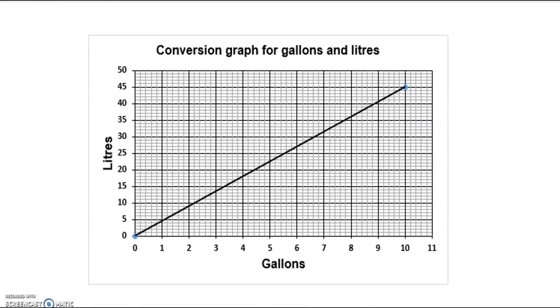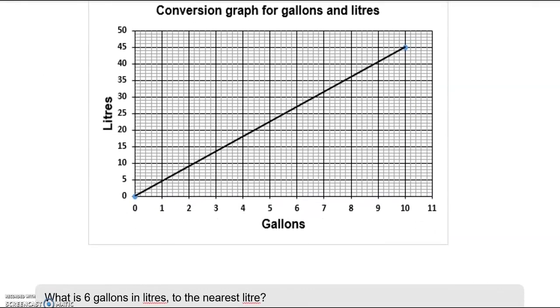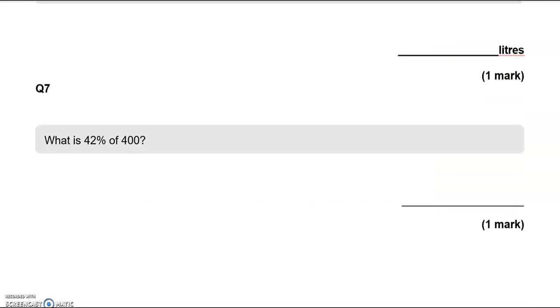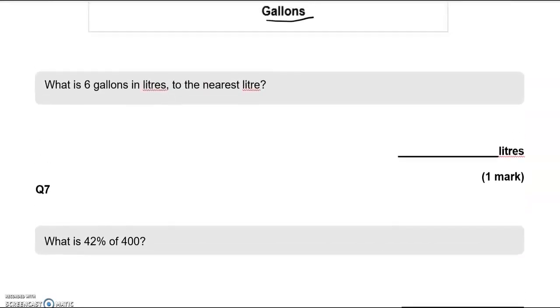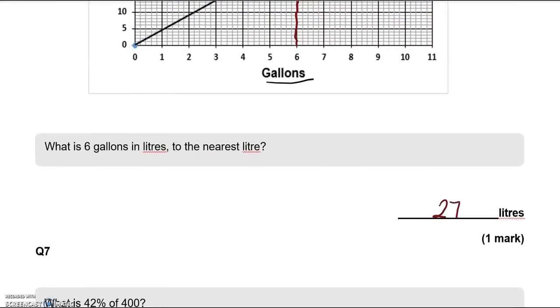So we've got a conversion graph for gallons in litres. What is 6 gallons in litres to the nearest litre? So going to gallons, 6 gallons. So going up. 7 gallons. So that is between 25 and 30. That is 27. So we'll write here 27 litres.